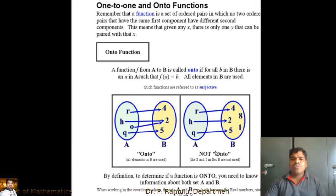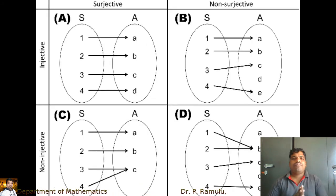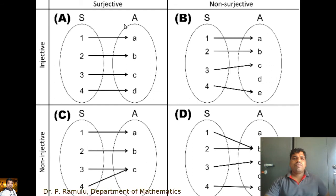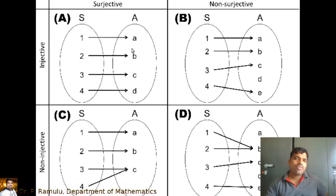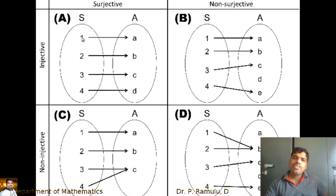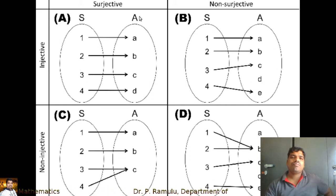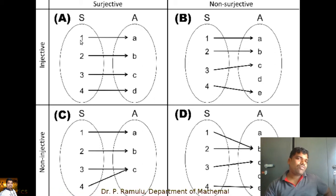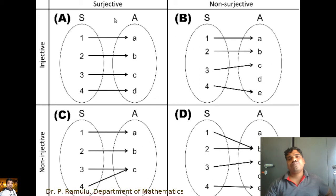Looking at diagram S: if every element of the codomain has a pre-image, it is onto. Here, 1 does not have a pre-image, so it is not onto. In the diagram where S = {1,2,3,4} maps to A = {A,B,C,D}: 1→A, 2→B, 3→C, 4→B. Distinct elements have distinct images. Every element of the codomain has a pre-image. Therefore, this function is injective (one-one) and surjective (onto), making it a bijection.